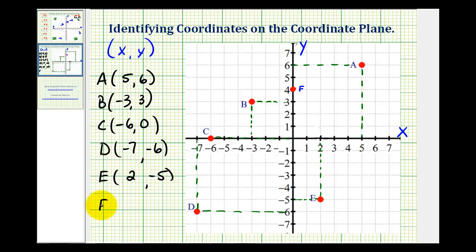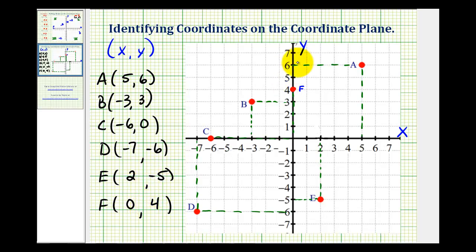And for the last point, we have point F, which lies on the y-axis. So if we drew a segment straight to the x-axis, notice how it intersects the x-axis right at zero. So the x-coordinate is zero, and then we can see the y-coordinate would be positive four. Notice how when the point lies on the y-axis, the x-coordinate is always going to be zero. And when a point lies on the x-axis, like point C, the y-coordinate will always be zero.